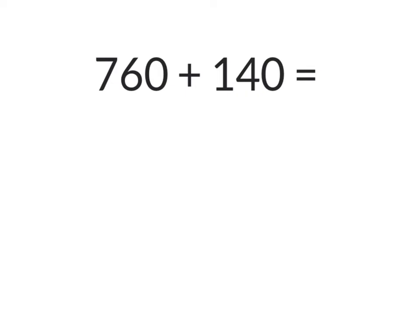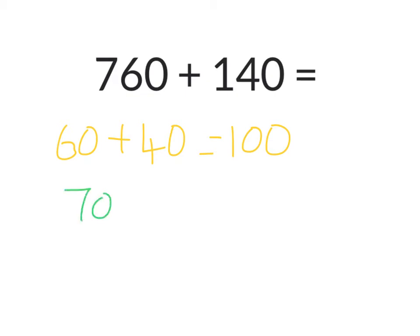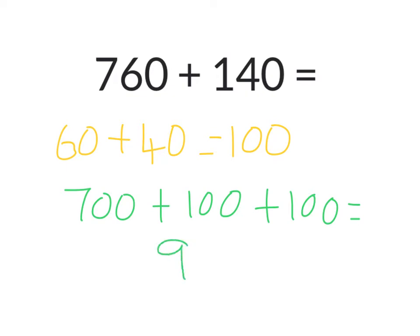I'm going to start by adding my tens together, so I'm going to add 60 plus 40. I know that 60 plus 40 equals 100. So now I need to add my 700 and my 100 and this other 100 that I've created altogether. So 700 plus 100 plus my other 100 altogether equals 900.